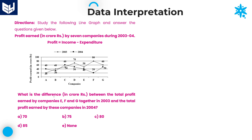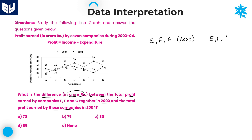Let us look at the second question. We need to calculate the difference — and the answer must be in crores — between the total profit earned by companies E, F, and G together in 2003, and the total profit earned by those same companies E, F, G together in 2004. First calculate each group's total, then find the difference.